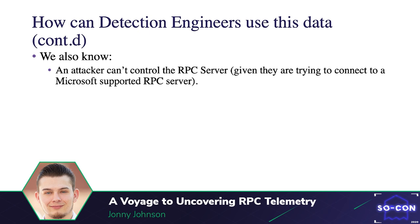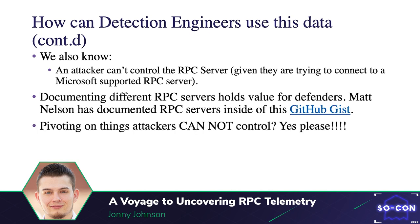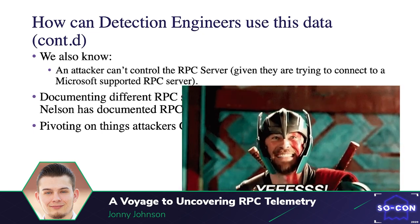When identifying this, I found that although there were many ways to interact with the interface, there was something the attacker cannot control — the server code itself. They cannot change the server code nor where it is stored. This is specific to Microsoft supported protocols. If we can map these server code locations to malicious techniques, that helps us as detection engineers identify places an attacker has to interact with. Matt Nelson documents these RPC servers for us inside a GitHub Gist. When we identify things an attacker cannot control, that becomes an ideal pivot point for defenders.